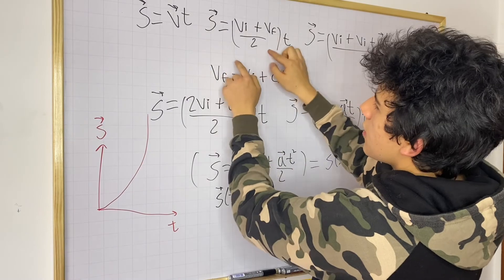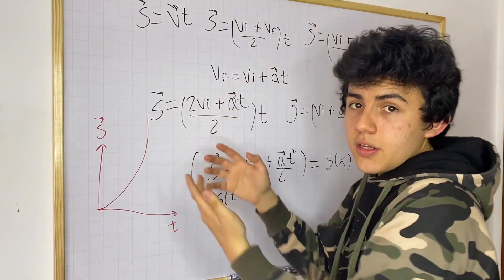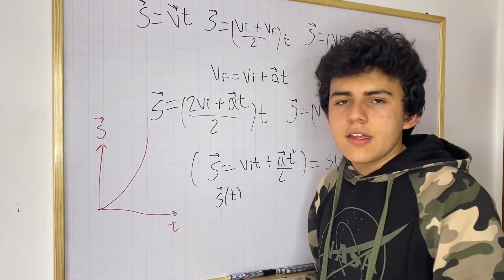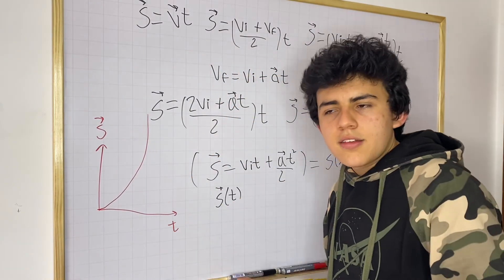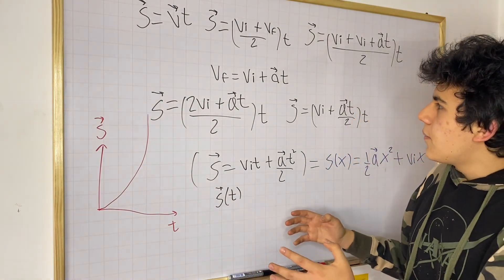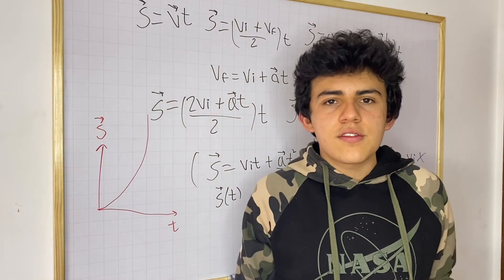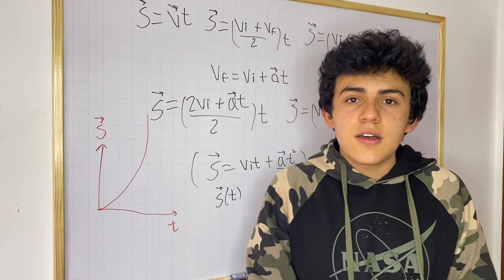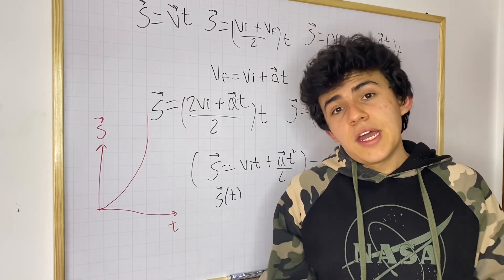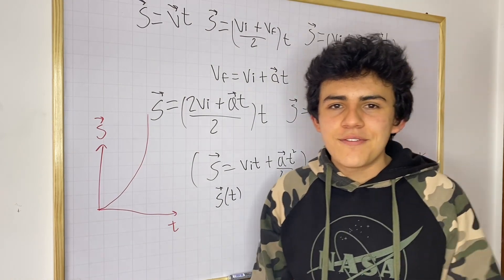From these derivations you can extract a lot of equations — for example, average velocity equals initial velocity plus final velocity divided by 2, which is probably very common. So from this single derivation you can take out a lot of things and learn a lot. I hope you guys enjoyed this video — see you in the next one!